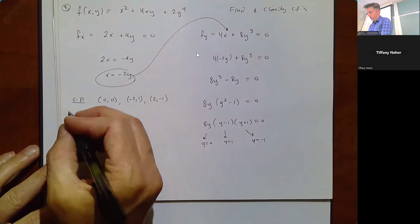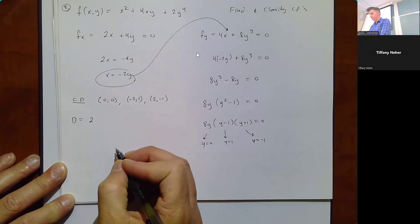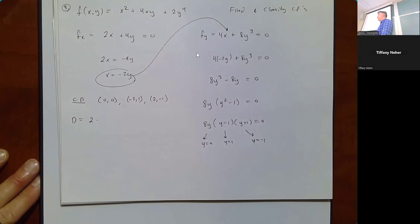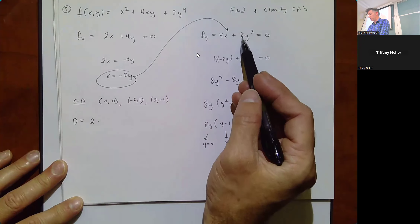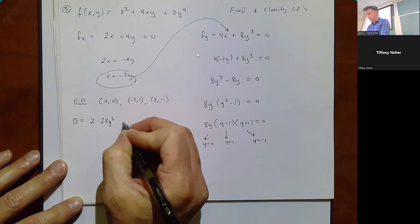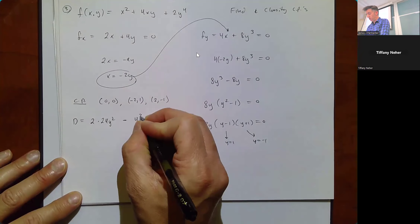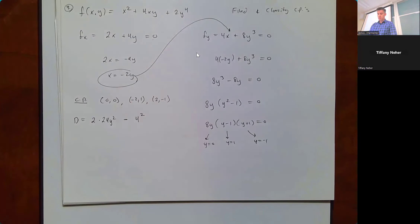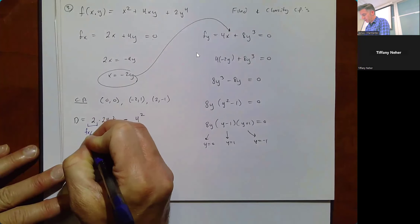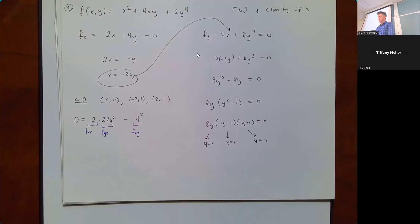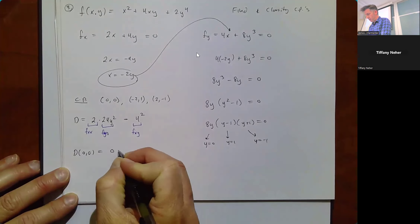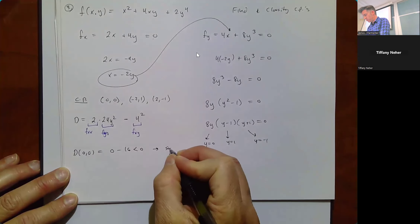Now find D. fxx = 2, fyy = 24y², fxy = 4. So D = (2)(24y²) - 4² = 48y² - 16. Since fxx = 2 is always positive, any max or min we find will have to be a minimum. At (0, 0): D = 0 - 16 = -16, which is negative, so (0, 0) is a saddle point.